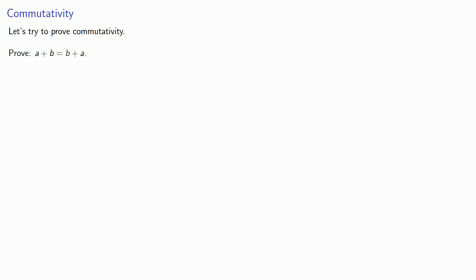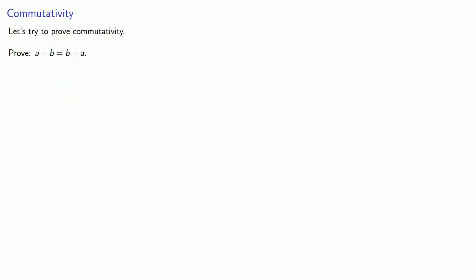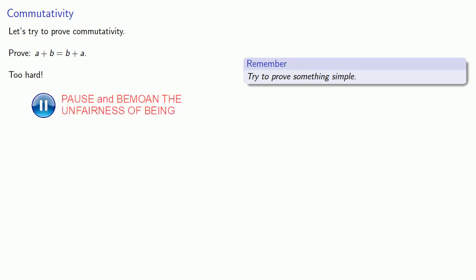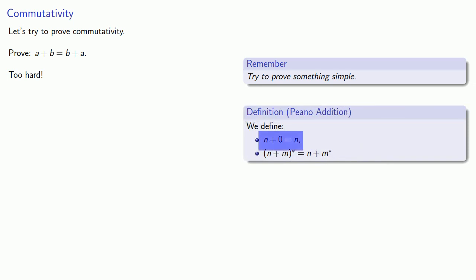So let's try to prove commutativity — that seems useful. Let's try to prove a plus b is equal to b plus a. Here's a useful idea: try to prove something simple. And proving a plus b equals b plus a actually turns out to be too hard. Our definition of addition tells us what happens when we add zero, so let's try to prove a plus zero is equal to zero plus a.